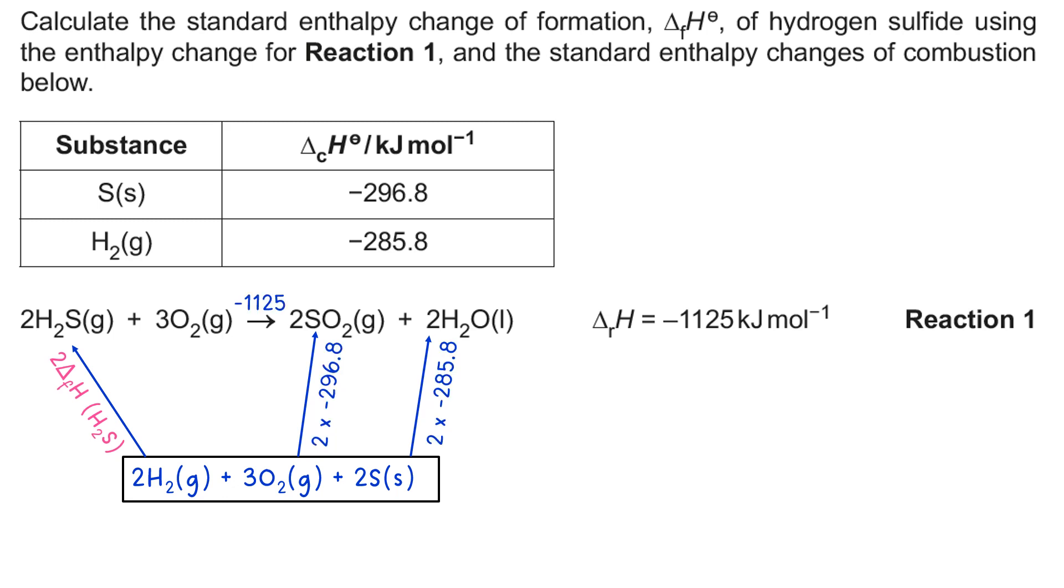Now if I put in the numbers and we keep in pink the thing we're trying to establish, we need to think about where we're starting, where we're finishing. The indirect route is how we have to go. We can't take the route that's right next to where the pink ΔfH is because that's what we're trying to work out.